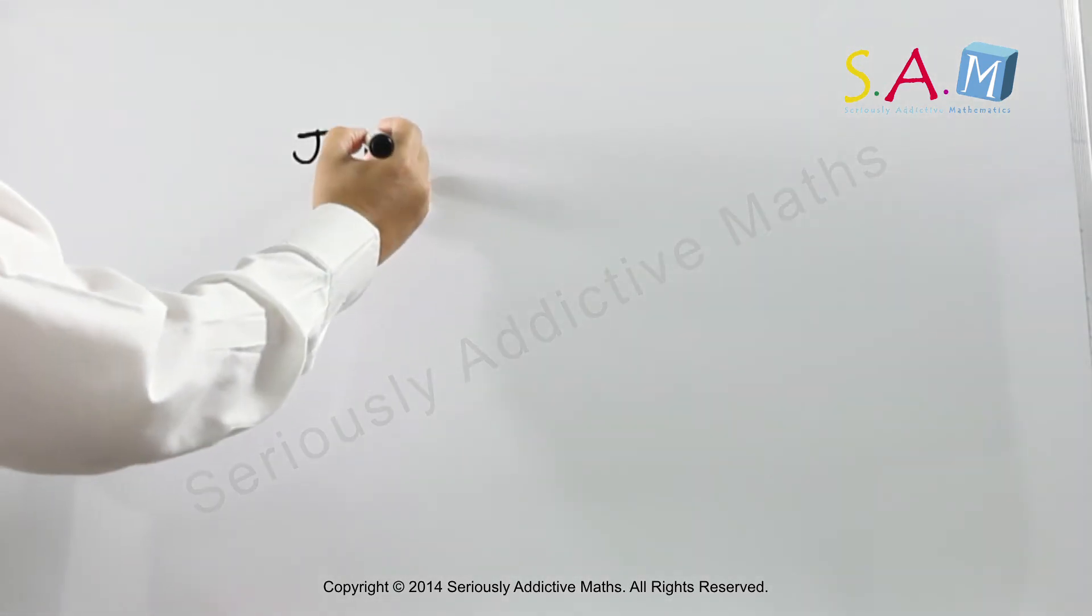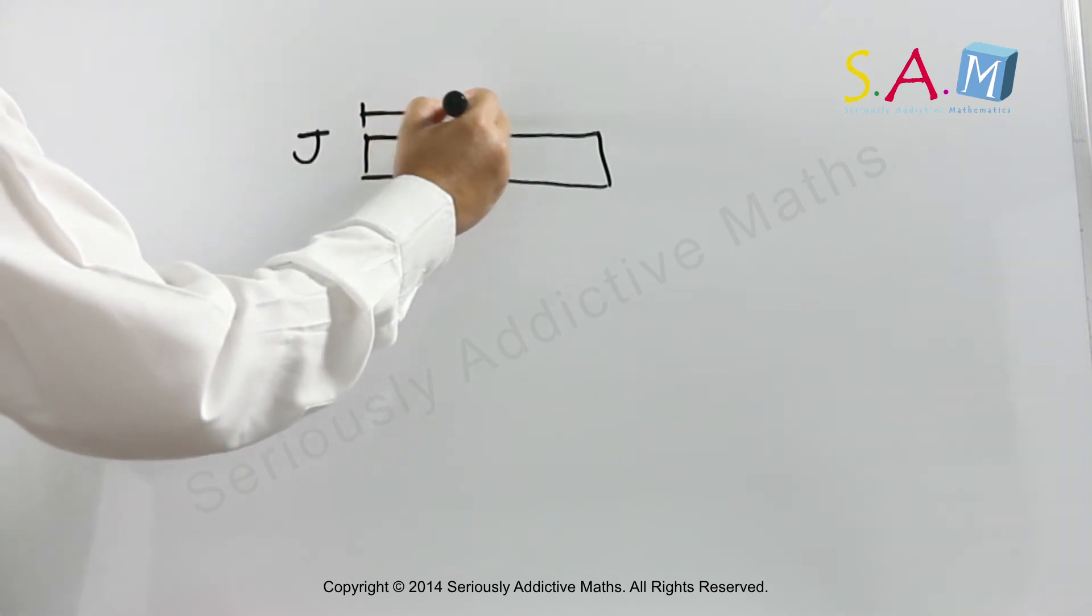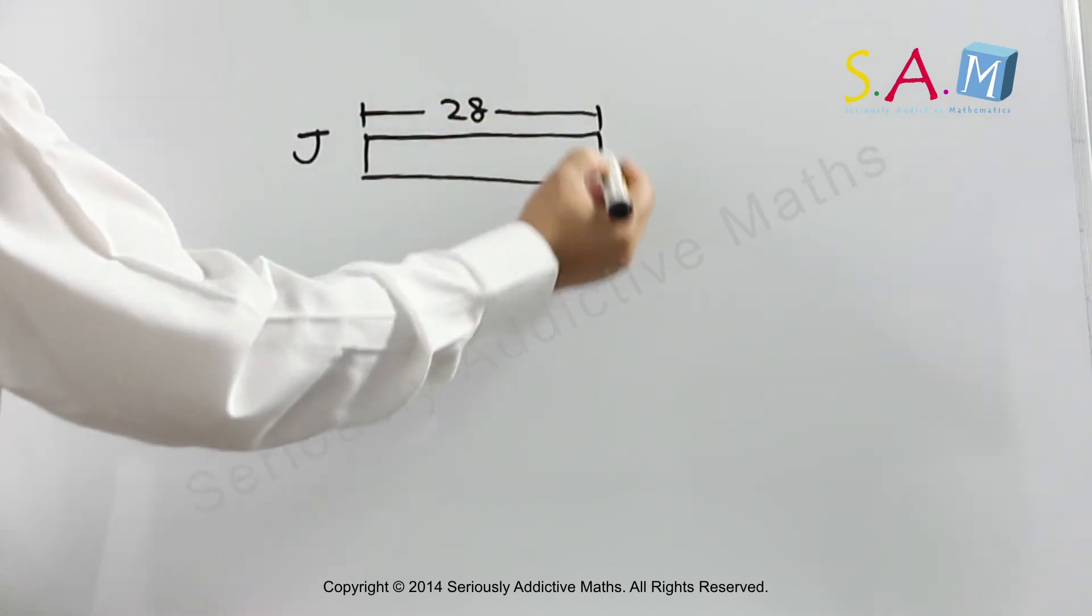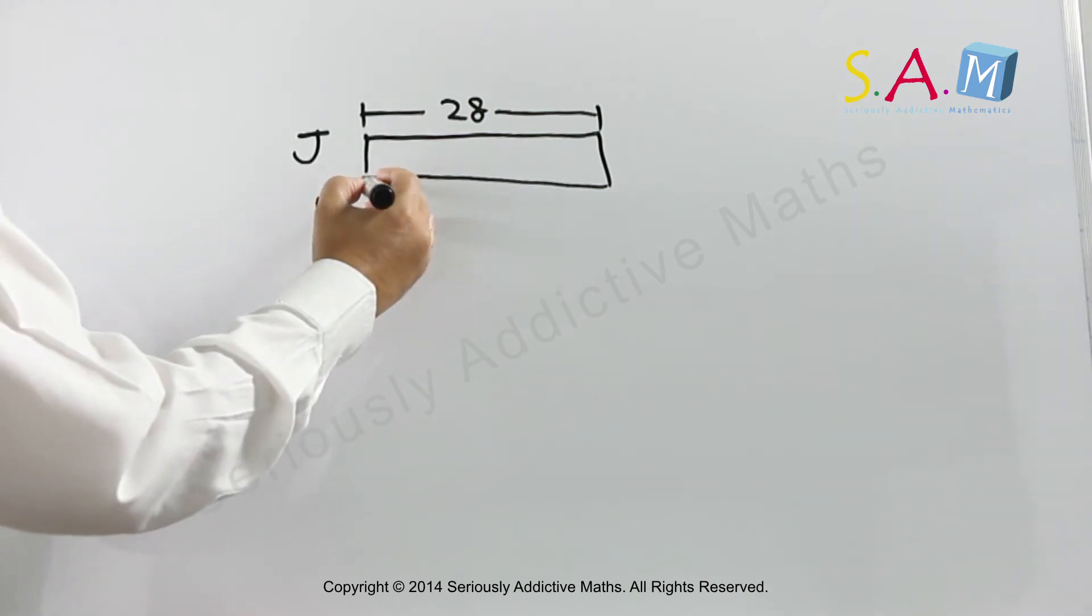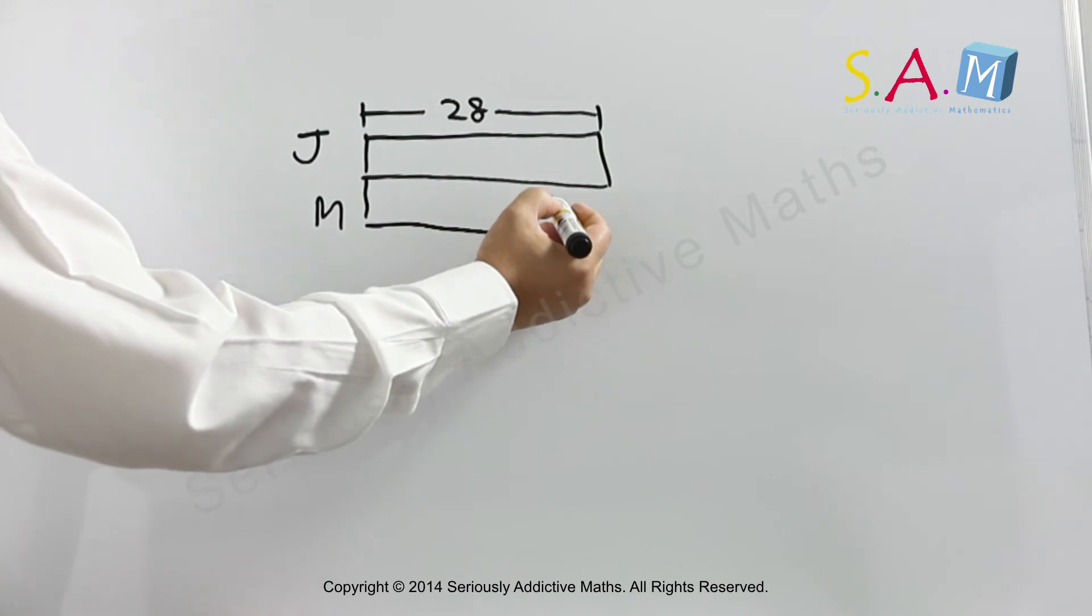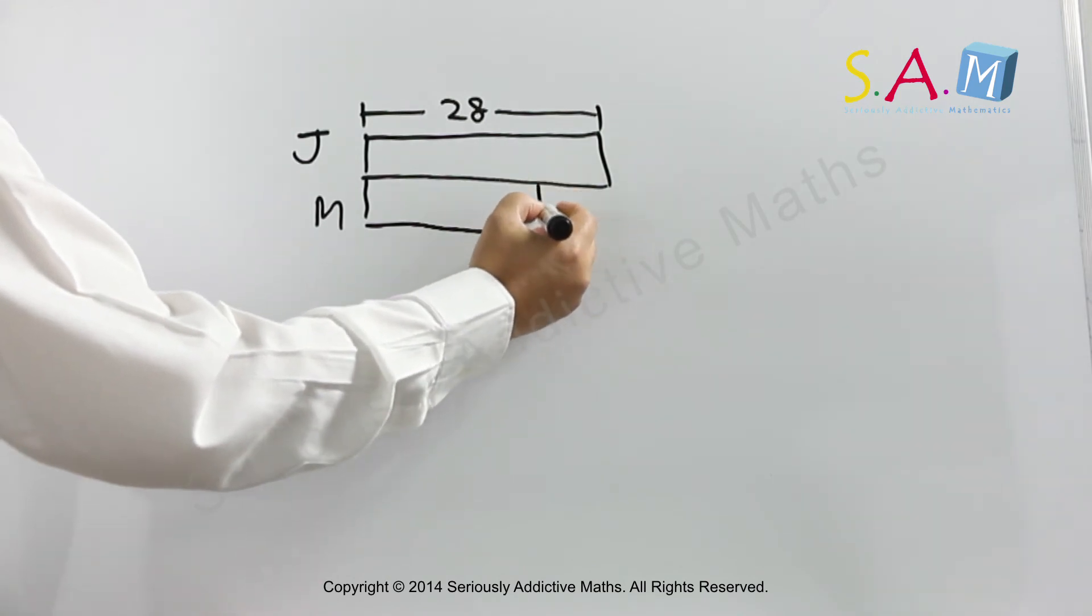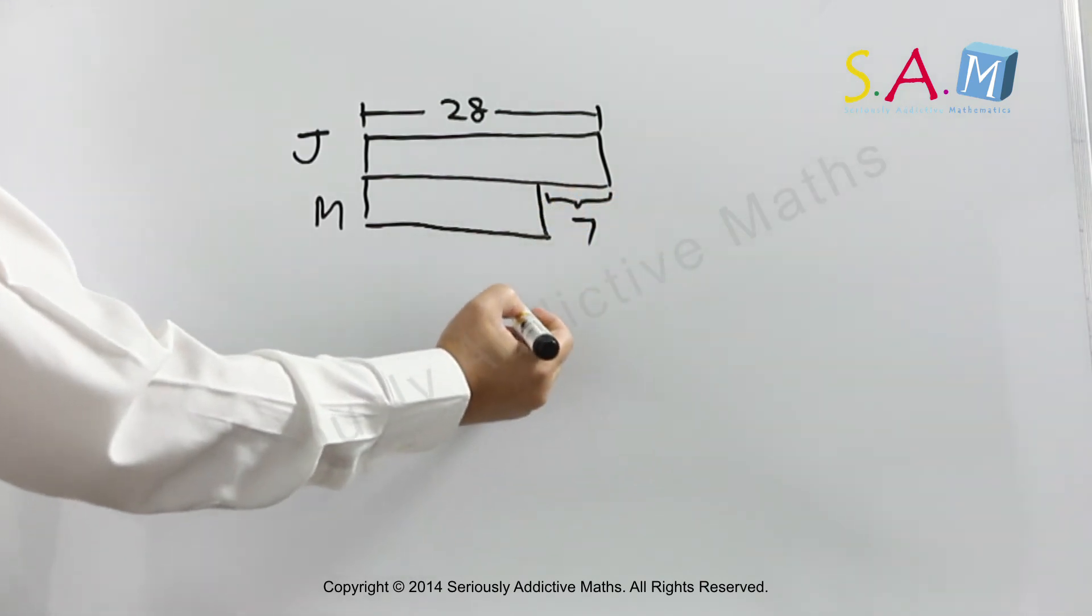Joseph has 28 stamps. So this is Joseph with 28 stamps. And Mary would be 7 less than Joseph because here we have Joseph having 7 more, so Joseph actually has 7 more than Mary.